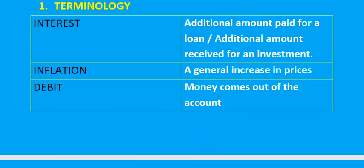Interest is the additional amount — remember when you define interest you need to look at the context. Sometimes interest is paid if you are taking out a loan, and sometimes interest is received if you are investing money. So if you are taking out a loan, interest is the additional amount paid, but if it is an investment, interest is the additional amount received.